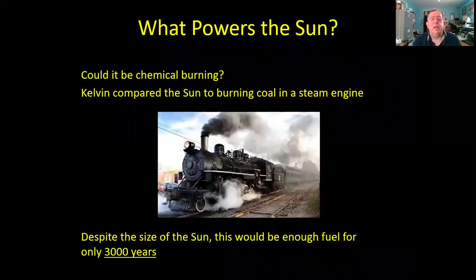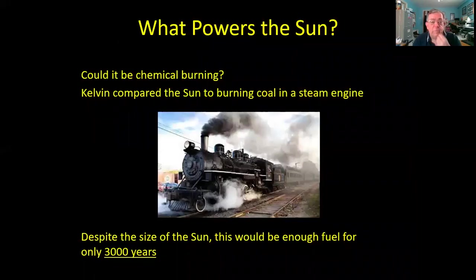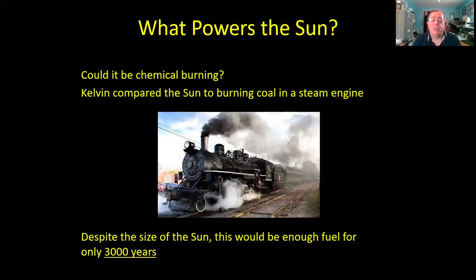Being a good Victorian-era gentleman, Kelvin decided to do some comparisons. He worked out that if he had a pile of coal the same mass as the sun and burned it at the same rate the sun pours energy out into space, it would only last for 3,000 years. The problem was that he knew the Earth had been around longer—civilizations in ancient Egypt and China had records dating back more than 3,000 years ago—so that couldn't be right.